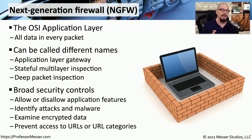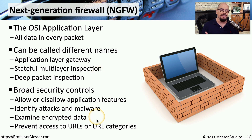A next-generation firewall can not only identify applications running over the network, it can identify individual features within the application. For example, you could set policies to allow someone to view information on Twitter but prevent them from posting. Most next-generation firewalls also have antivirus and anti-malware capabilities to block known malicious software at the network level. They commonly include SSL decryption capability — decrypting SSL traffic, examining it, then re-encrypting it — and URL filtering to block access to specific websites or categories.